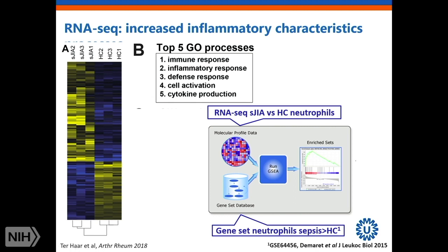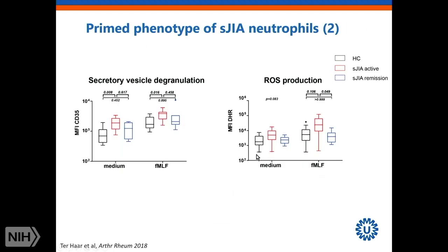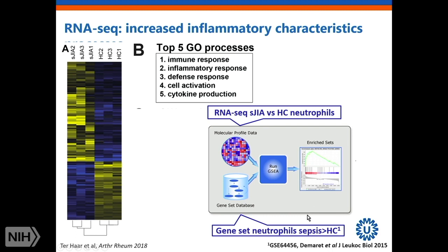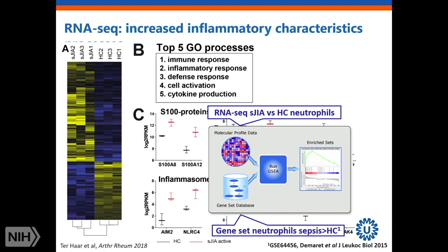We did an RNA sequencing experiment with three systemic JIA patients, in which we sorted neutrophils — very fragile cells — with three healthy control samples beside that. The differentially expressed genes were all related to immune responses. Strikingly, if you compare them to a known dataset of sepsis patients, you see quite remarkable similarities between active sepsis patients and active systemic JIA patients.